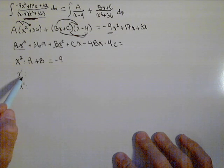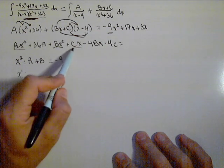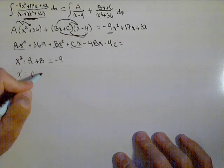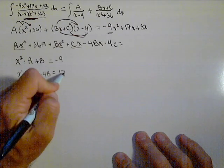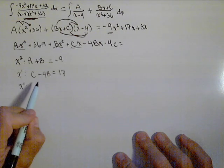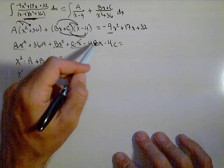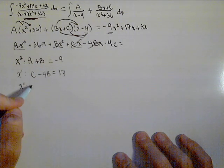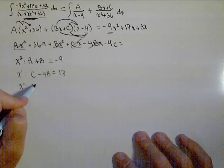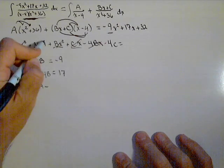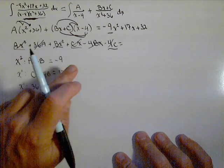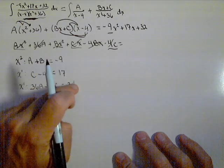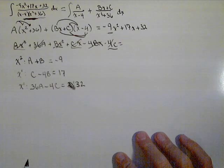Now, we're gonna do the same thing for x terms. There's not many x terms here. So we have positive C minus 4B equals 17. Notice I don't put the x's in. They're represented over here. I'm just looking to solve these coefficients, and I'll show you how we can do that with a matrix once we have it set up. Last, we have our constant terms. So we have 36A minus 4C, and that has to be equal to our constant term of 32.